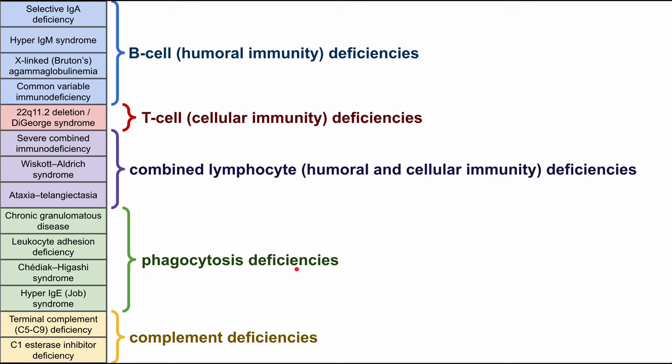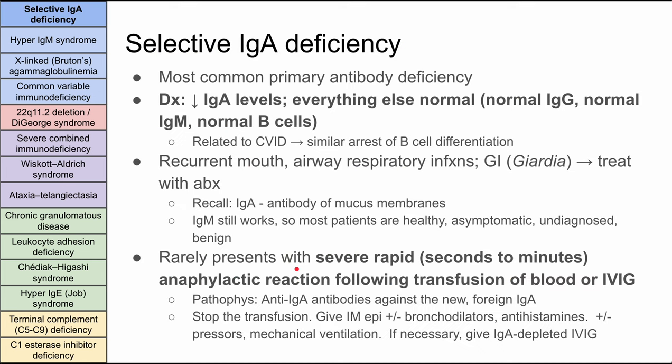So we'll go through them one by one. First we have selective IgA deficiency. This is the most common antibody deficiency. To diagnose it you look for low IgA levels, which makes sense given the name. Everything else should be normal: IgG will be normal, IgM is normal, and B cells are normal. This is related to common variable immunodeficiency, which we'll talk about later. There's an arrest of B cell differentiation that leads to low IgA levels. This will present with recurrent mouth, airway, respiratory, and GI infections. You'll treat these infections with antibiotics.